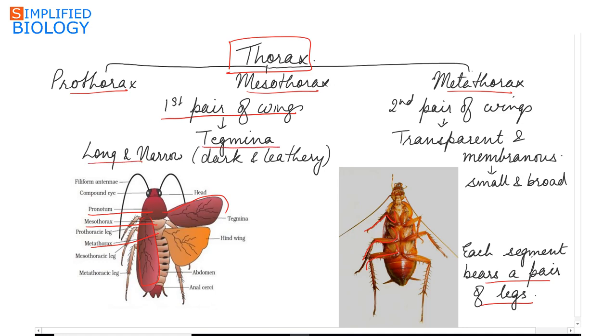They are long, narrow, dark and leathery, and they cover the hind wings at rest.